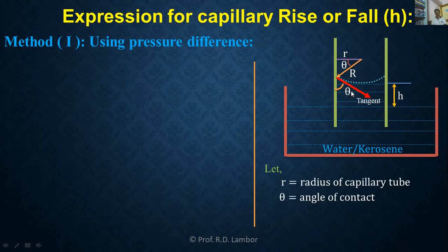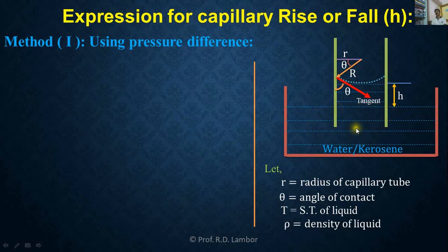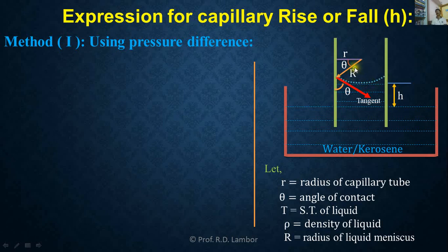If we use surface tension, it will be given as capital T. R is the radius of curvature of the liquid meniscus, and rho is the density of the liquid. Because the liquid meniscus is concave in shape, its radius of curvature is R.